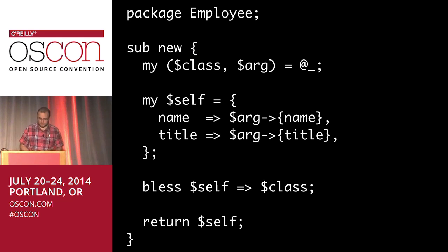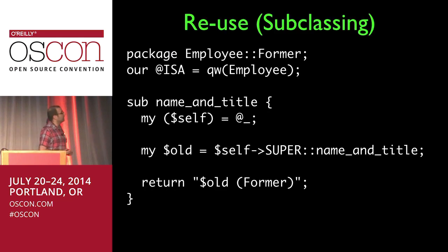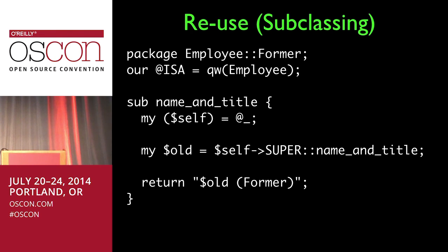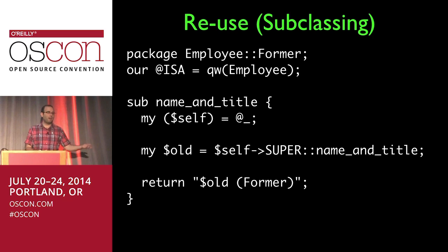If we want to reuse code, we do something like this: a new class for representing former employees — people who do not work with us anymore for reasons we are not allowed to discuss. We write a new class, say 'our @ISA' to declare what we are (a kind of employee), give it a new method called 'name and title,' and it calls the superclass method and returns that with 'former' stuck at the end. So 'Bob Jones, CEO' becomes 'Bob Jones, CEO, former.' Any questions so far?